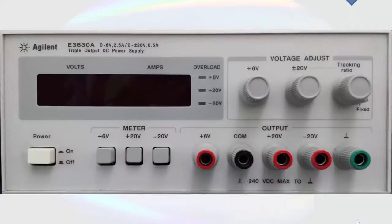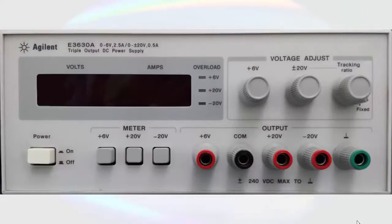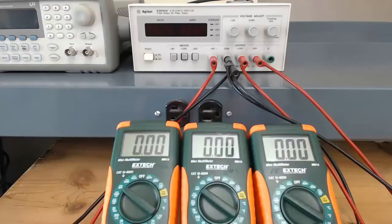The tracking ratio knob determines if the negative 20 volt output has the same absolute value as the positive 20 volt output. When it is set to fixed, both of the 20 volt outputs will have the same absolute magnitude, but one will be positive and one will be negative. The last thing I will point out on the front panel is the power button. This turns the power supply on and off. Now that we have a general orientation to the DC power supply's front panel, let's take a look at it in operation.